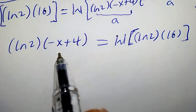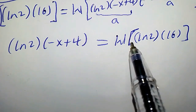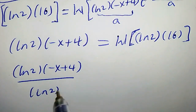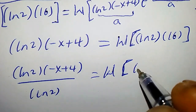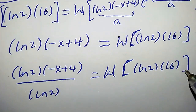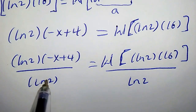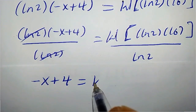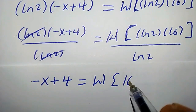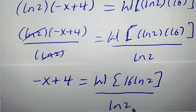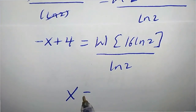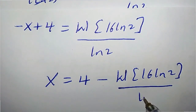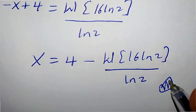To make x the subject of the formula, divide both sides by ln 2. So we have ln 2 times negative x plus 4 all over ln 2 equals W of ln 2 times 16 all over ln 2. The ln 2 terms cancel, leaving negative x plus 4 equals W of 16 ln 2 all over ln 2. Therefore, x equals 4 minus W of 16 ln 2 all over ln 2. This is the required value of x. Thanks for watching.